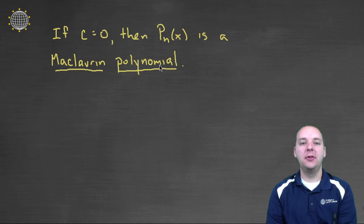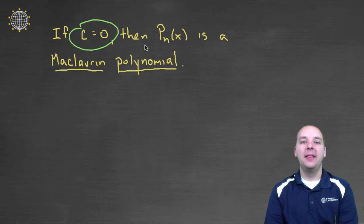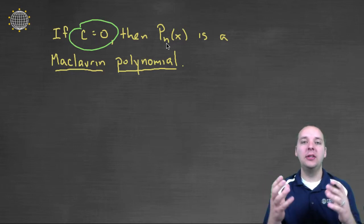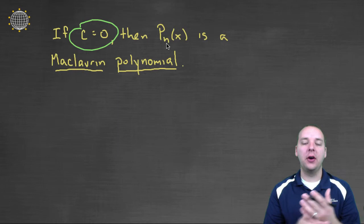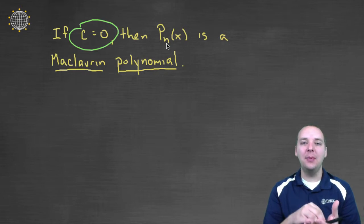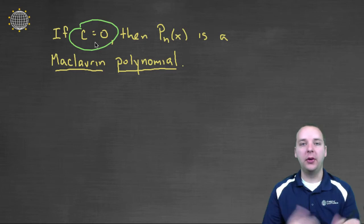So here's our definition of a Maclaurin polynomial. If your polynomial is centered at 0 specifically, then your Taylor polynomial is actually more specifically called a Maclaurin polynomial. So let's make sure we understand this hierarchy. A Maclaurin polynomial is not something different than a Taylor polynomial. It's a special type of Taylor polynomial. It's the types that are centered at 0. If it's centered anywhere else, then we just call it a plain old Taylor polynomial.